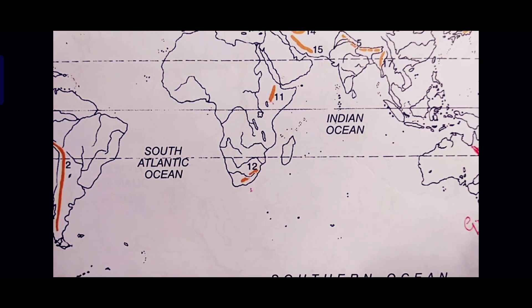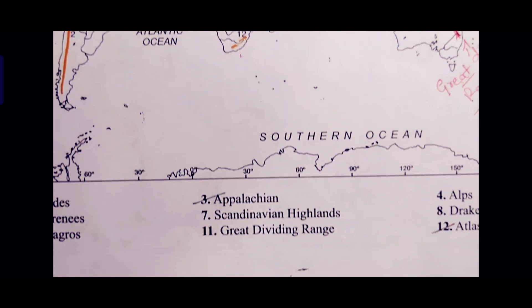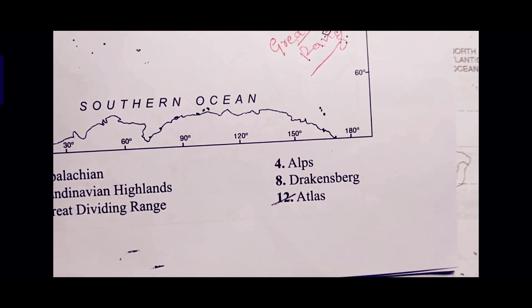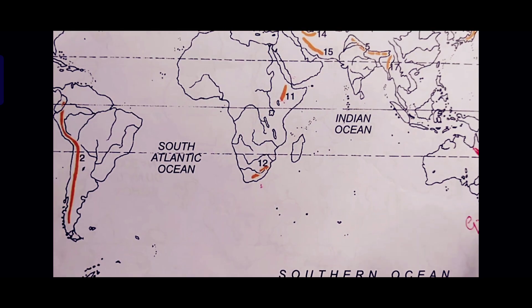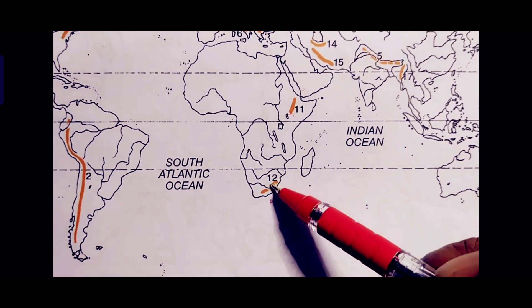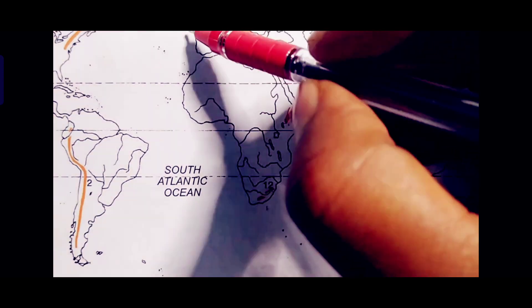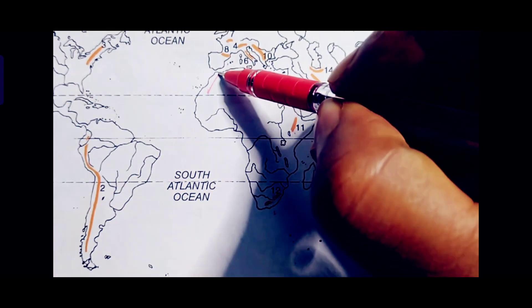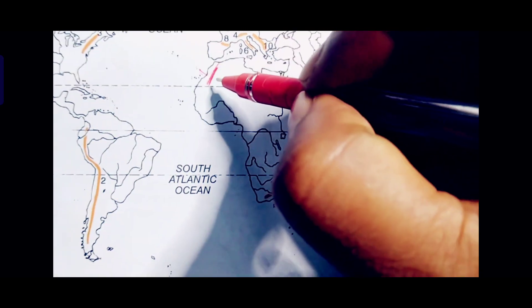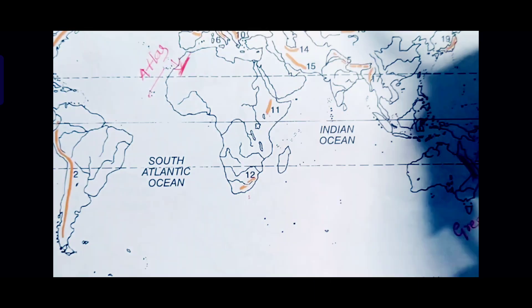The next mountain is the Atlas Mountain, number 12. In the index, number 12 is Atlas. In this map, it is marked in South Africa, but it should be marked in North Africa. Draw a line above the Tropic of Cancer and label it 'Atlas Mountain.' This is the correct location of the Atlas Mountain.